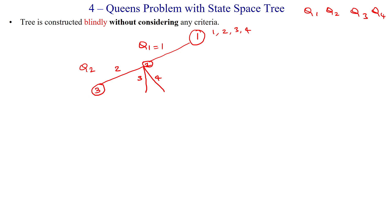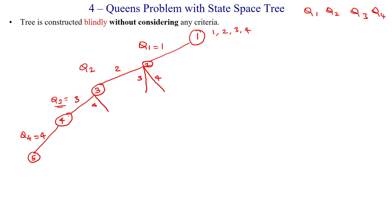From node 3, queen 3 can be placed in two options: third column or fourth column. Placing queen 3 in the third column leads to node 4. From there, queen 4 can be placed in column 4, leading to node 5. All options are exhausted here — I am placing blindly without checking any conditions for same row, same column, or same diagonal.